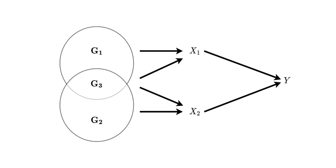Pathways from the genetic variants to the outcome outside of the exposure of interest are defined as horizontal pleiotropic effects, and can lead to bias in causal effect estimates. Looking at the graph, we could potentially perform two two-sample summary MR analyses, estimating the effects of each exposure upon the outcome Y. However, in doing so, we would rely on the genetic variants used either being independent of the alternate exposure, or the alternate exposure being independent of the outcome.